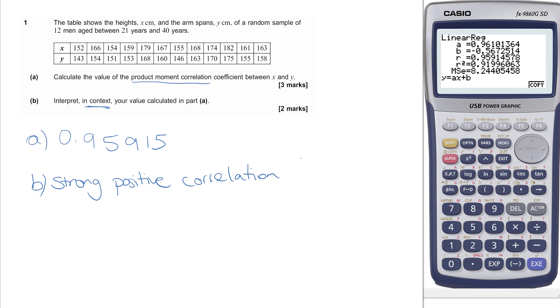So in context, what does that mean? That means that, effectively, taller men aged between 21 and 40 will have a longer arm span than shorter people.